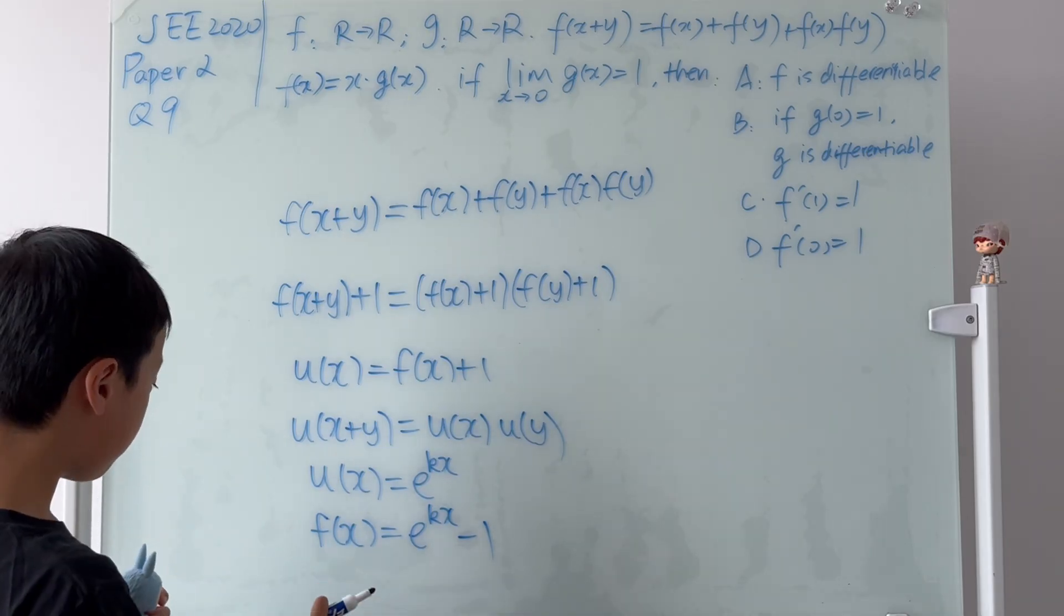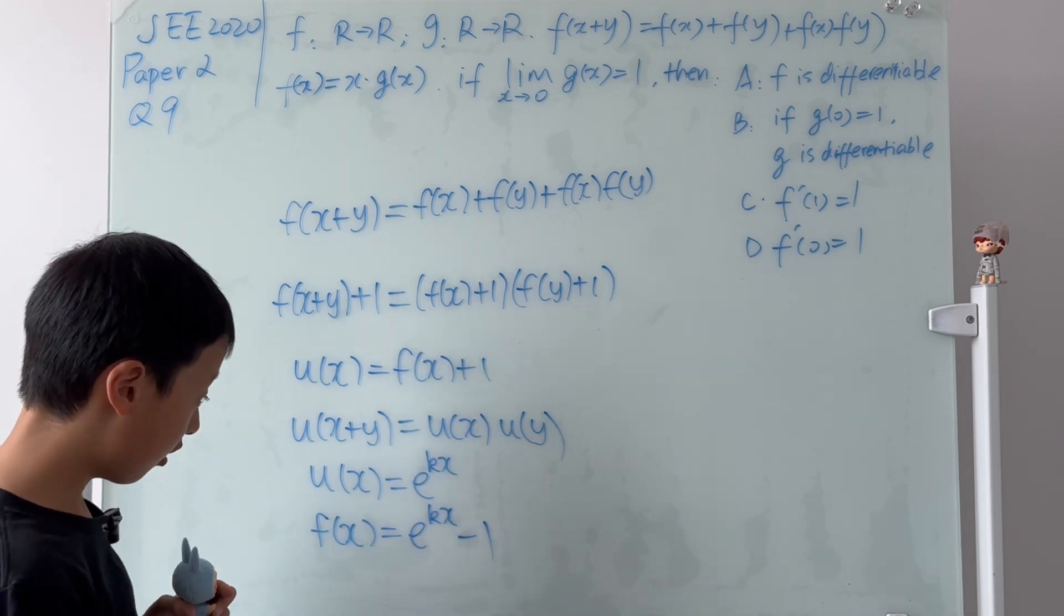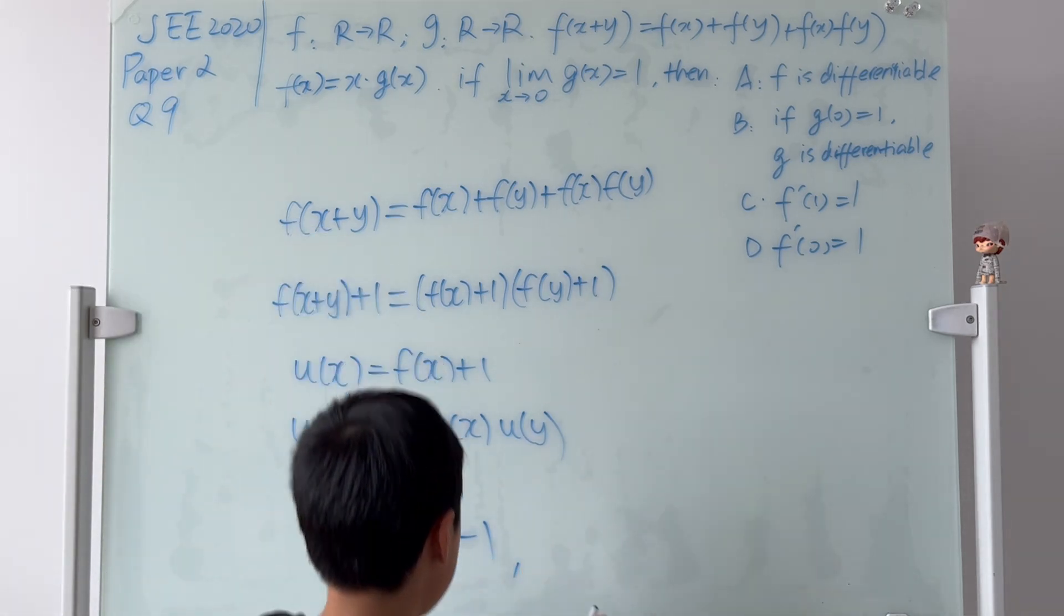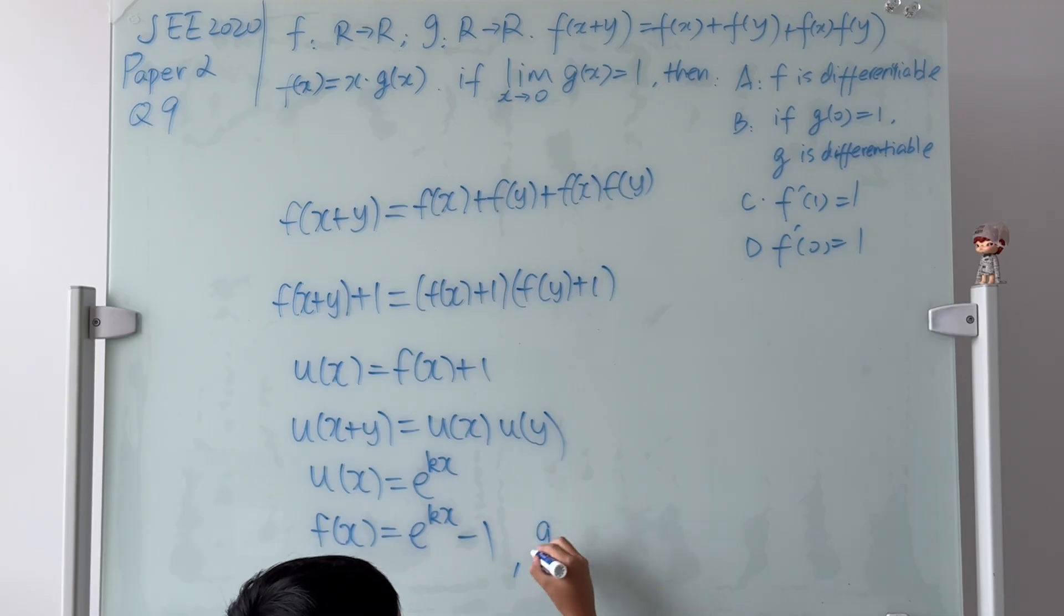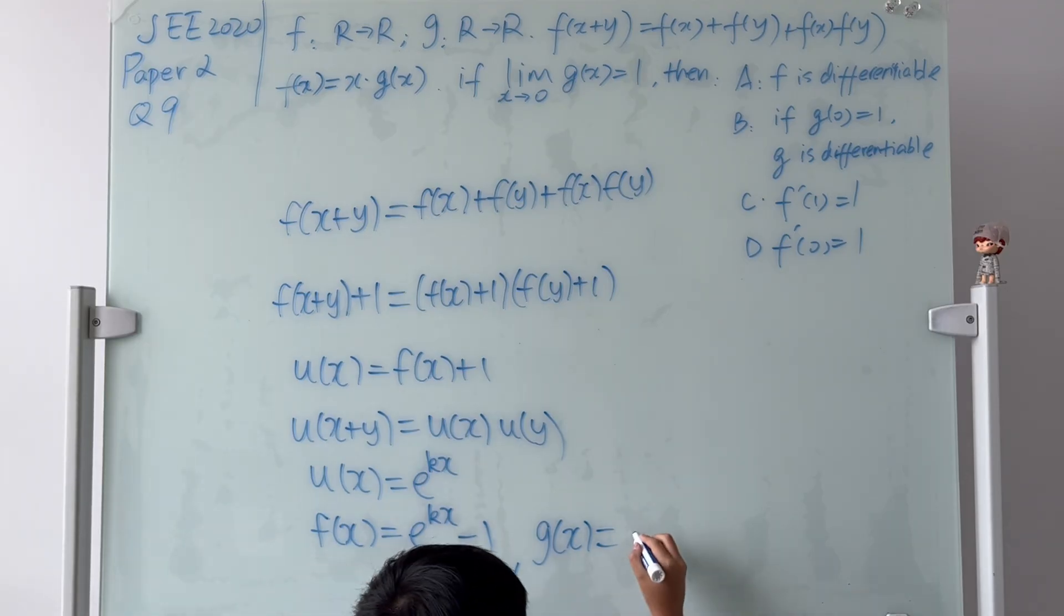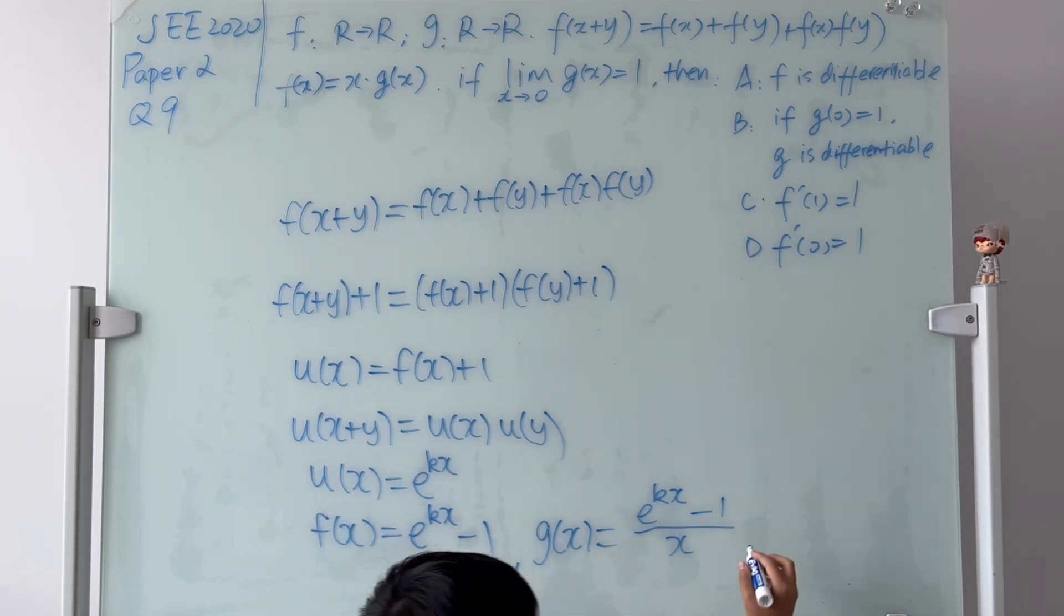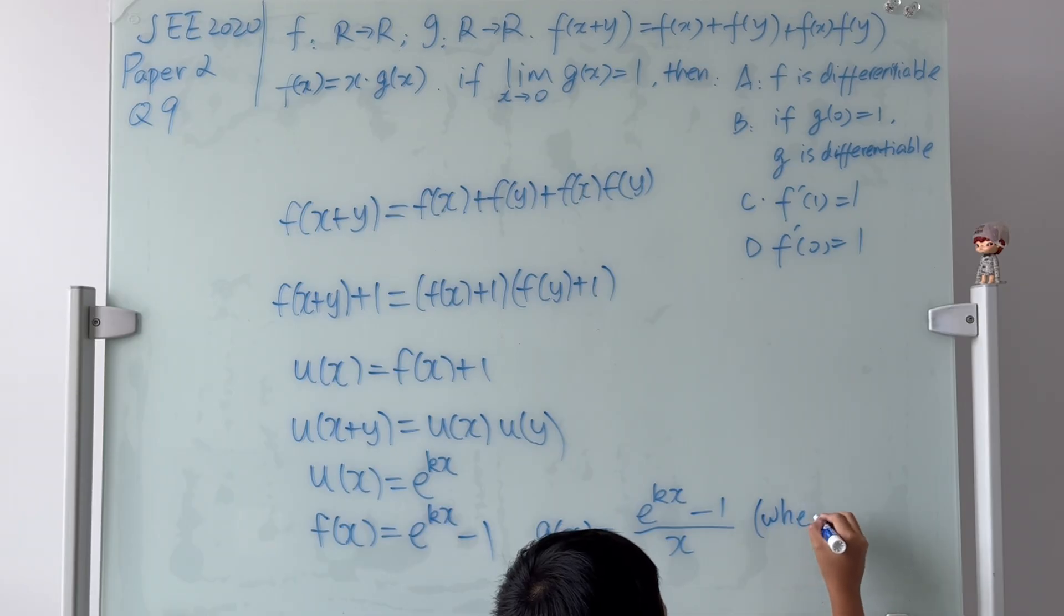And we know that f(x) is equal to x times g(x), right? So we know that g(x) is equal to (e^(kx) - 1) divided by x. But this only works when x is not equal to 0.